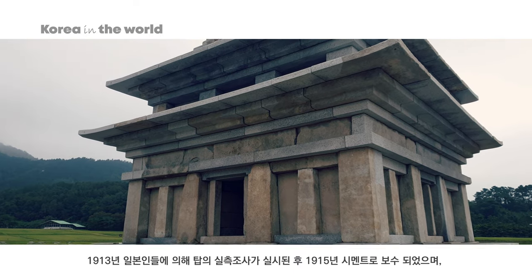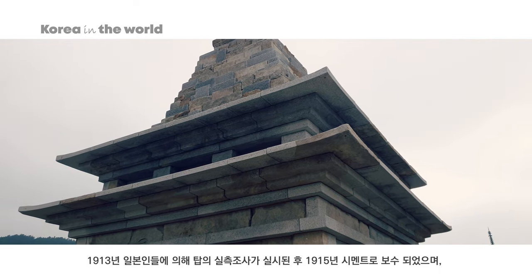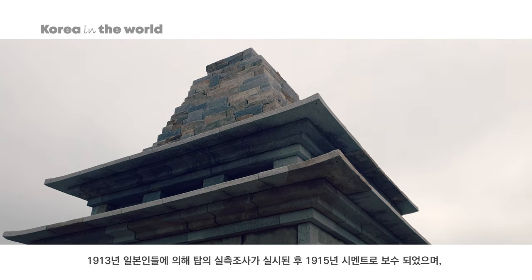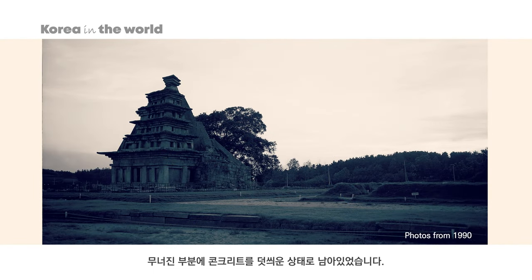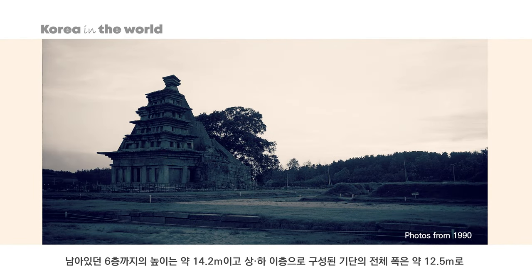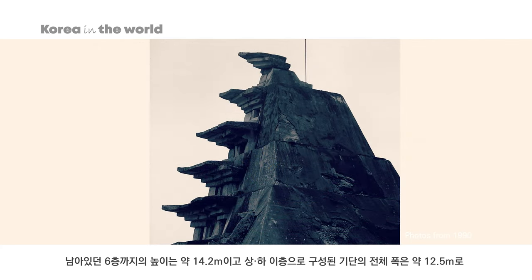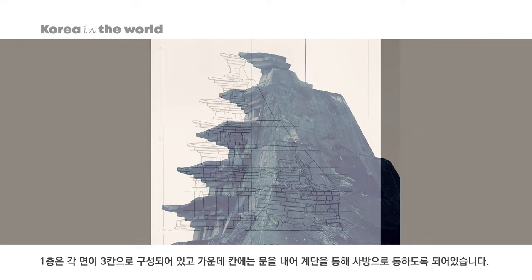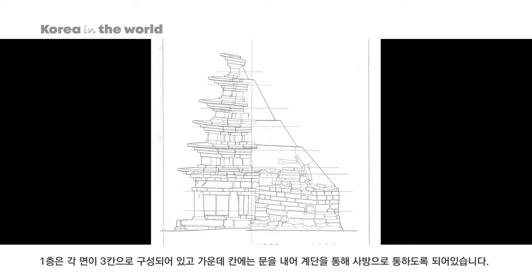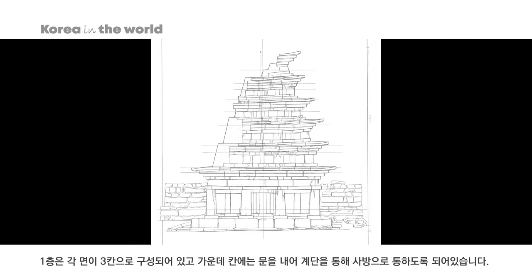1913년 일본인들에 의해 탑의 실측 조사가 실시된 후 1915년 시멘트로 보수되었으며 무너진 부분의 콘크리트를 덧씌운 상태로 남아 있었습니다. 남아있던 6층까지의 높이는 약 14.2m이고 상하 2층으로 구성된 계단의 전체 폭은 약 12.5m로, 1층은 각 면이 3칸으로 구성되어 있고 가운데 칸에는 문을 내어 계단을 통해 사방으로 통할 수 있도록 되어 있었습니다.